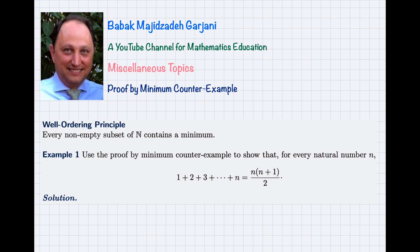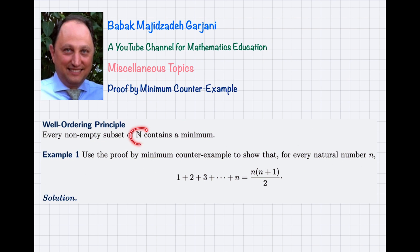Let me just refresh your memory about the assertion of the well-ordering principle. Every non-empty subset of ℕ, the set of natural numbers, contains a minimum. So it means that if A is a subset of the natural numbers and it is not equal to the empty set, then it is guaranteed that A contains a minimum element. And of course, a minimum element of a set is always unique.